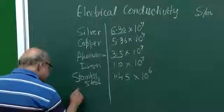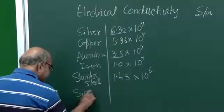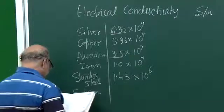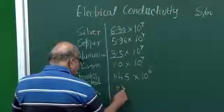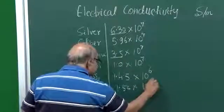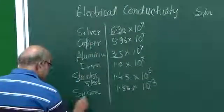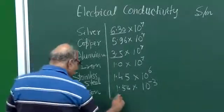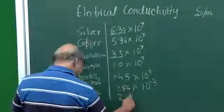And then, silicon. The conductivity is 1.56 into 10 power minus 3. Germanium, it is 2.17, just 2.17.